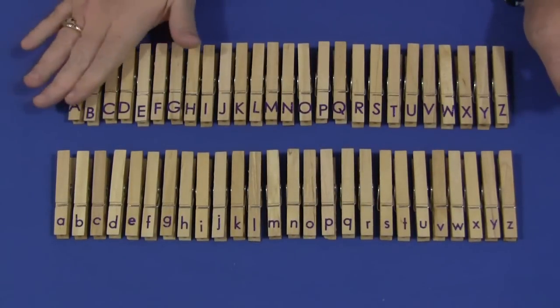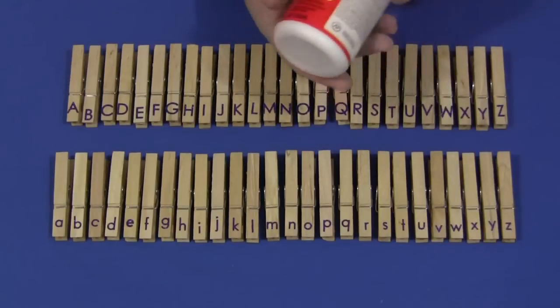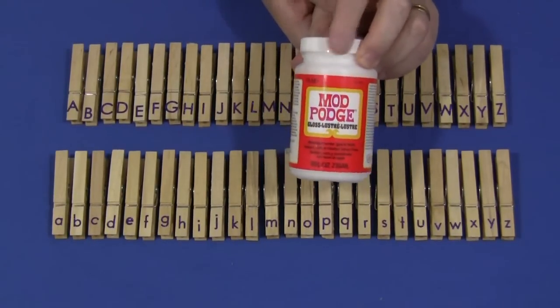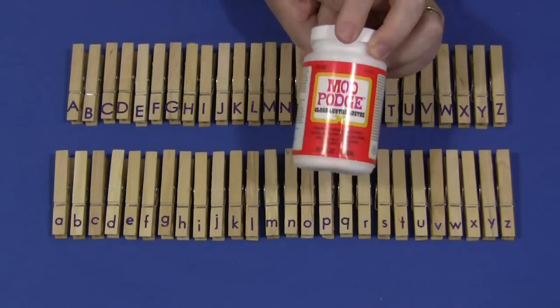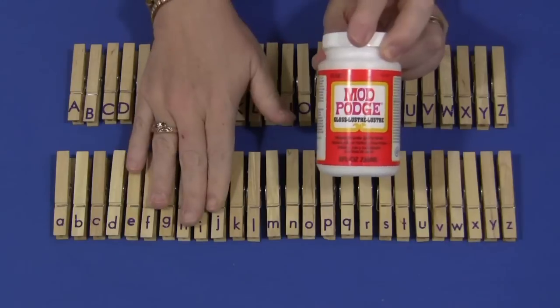And after that, the rest was easy. You just put the stickers onto the clothespin and then I gave it a layer, a couple layers of Mod Podge, which I like to use to seal everything. It's not like an acrylic sealer or anything, but it's going to help protect the stickers on your clothespins.